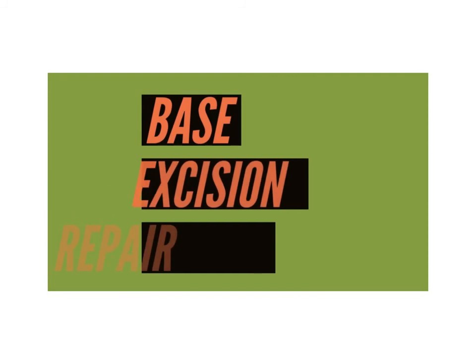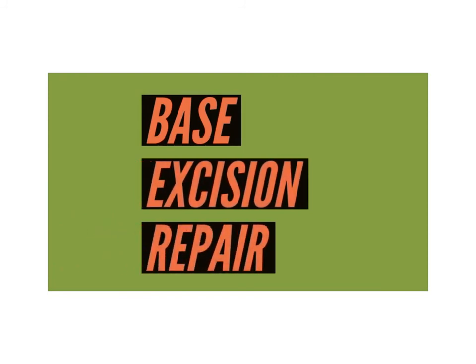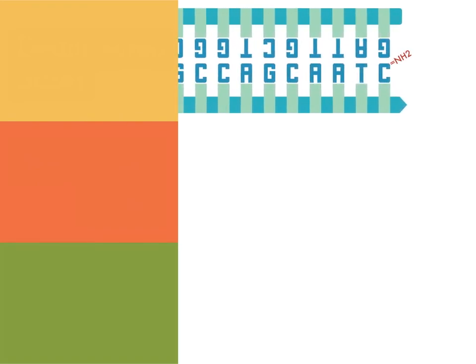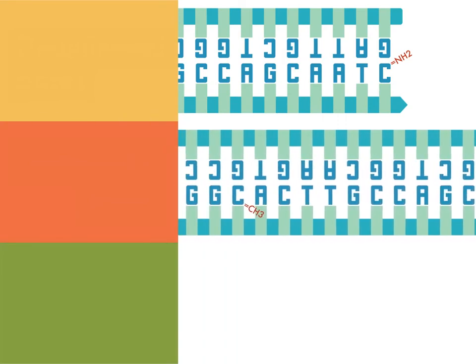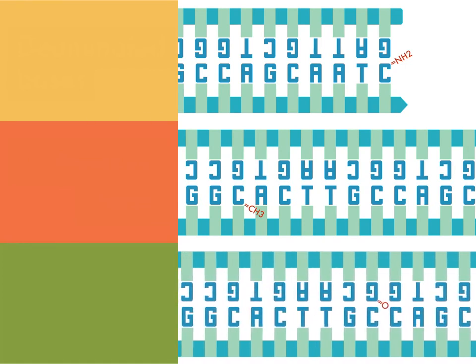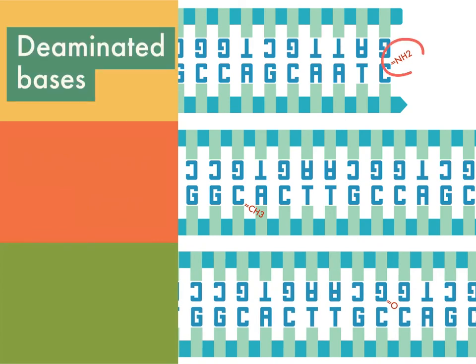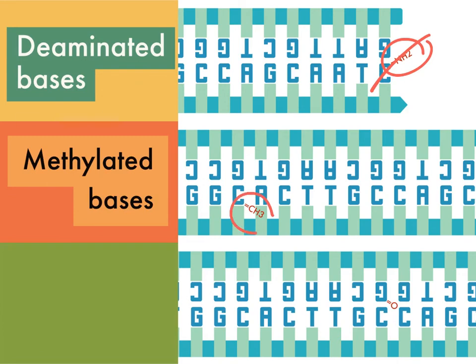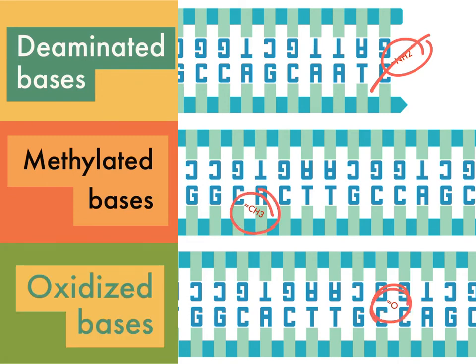The final single-stranded repair mechanism is base excision repair, which carries out much of the day-to-day repair of the genome, including damage from spontaneous DNA decay, environmental chemicals, and radiation. The types of damage repaired by base excision repair include deamination — the removal of an amino group — methylation, the addition of a methyl group, and oxidation. Note that these forms of DNA damage do not distort the DNA double helix, but left unrepaired, deamination, methylation, and oxidation can result in incorrect base pairing during later rounds of replication.